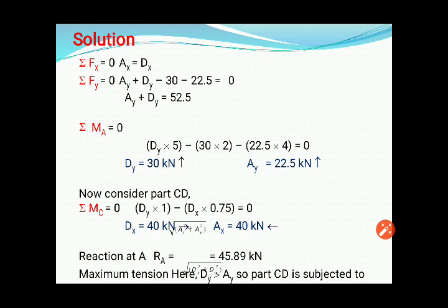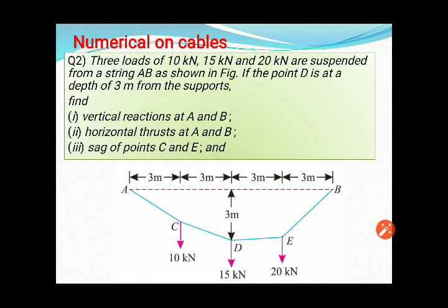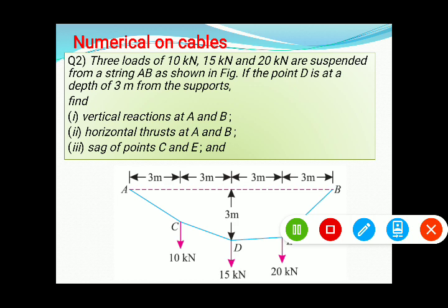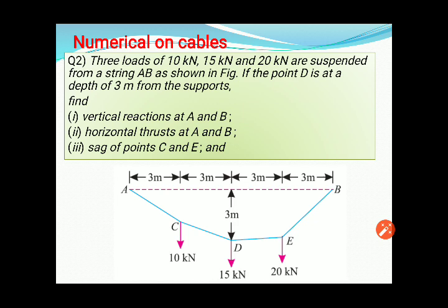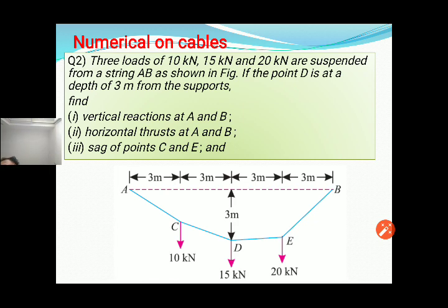Second numerical: three loads of 10 kN, 15 kN, and 20 kN are suspended as shown in the figure. The sag at point D is given as 3 m. The sags at the other points are not given. Find the vertical reactions at A and B, the horizontal thrust at A and B, and the sags at points C and E.